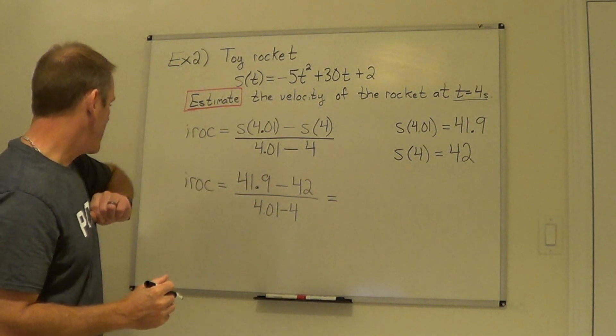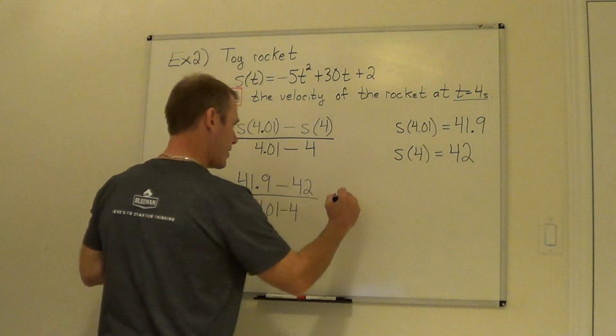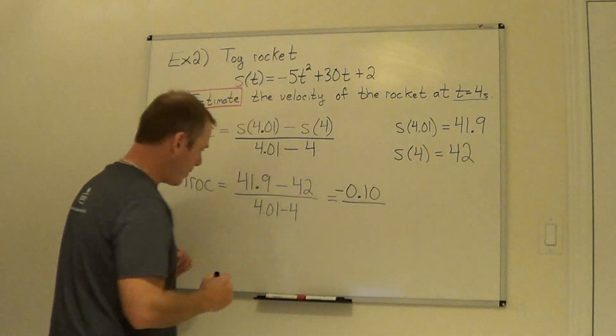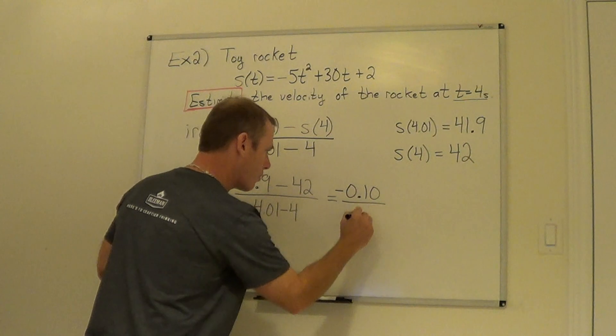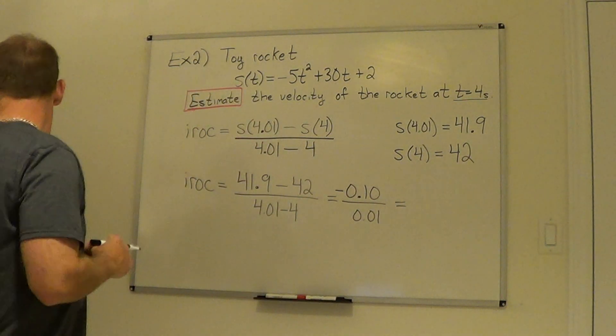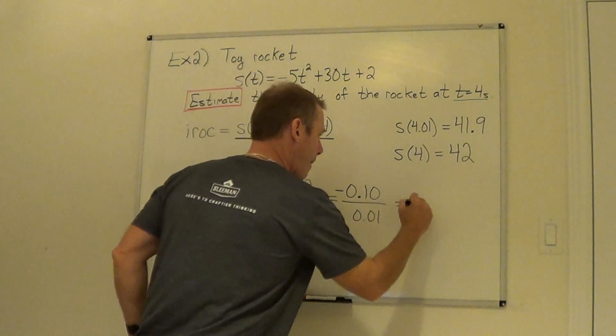$41.90 minus 42, I'm going to have 10 cents left, or minus 10 cents I should say, and down below I'm going to have 0.01, and if I divide those two, I'm going to get minus 10.